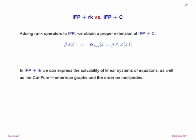So we define what we call fixed-point with rank. We can do everything we can do in fixed-point with counting. In addition, we can express the solvability of linear systems of equations, the Cypher-Ehrmann graph property, and the order on multipedes — the various polynomial time properties that had been shown not to be definable now become definable in this logic. Three-colorability is not definable as far as we know. So that was the logic we proposed.